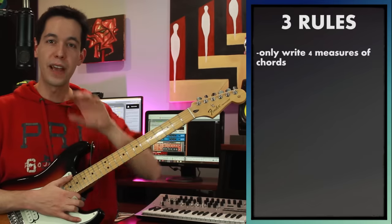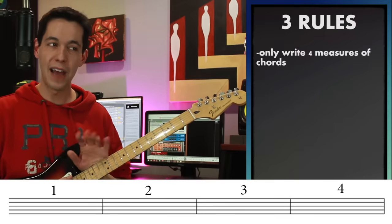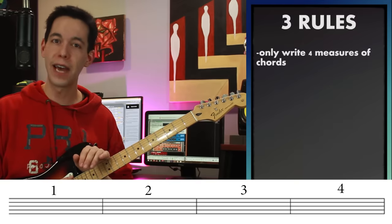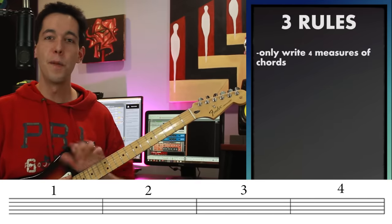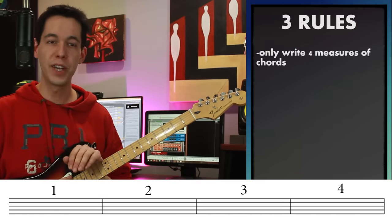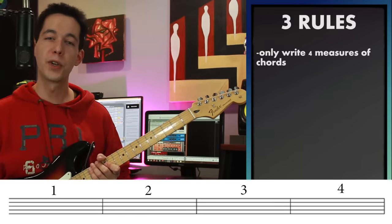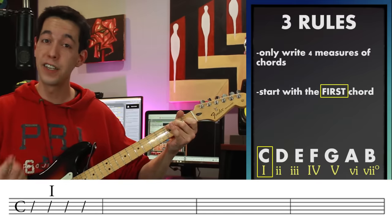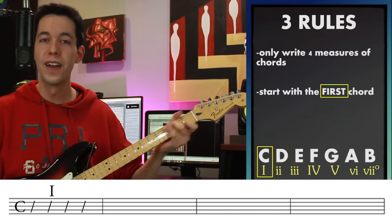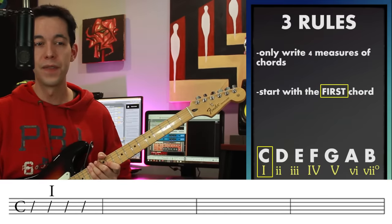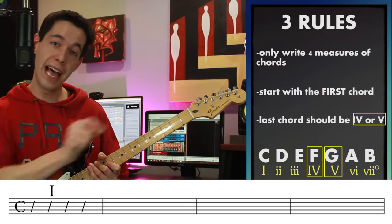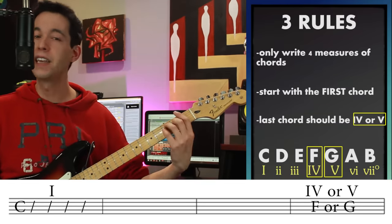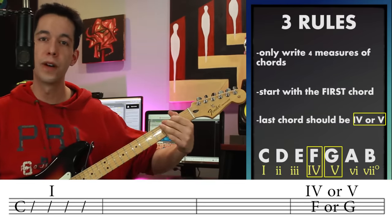Number one: make sure that we're writing four measures of music. I think four is a great place to start. Our next rule is to make sure that we're starting on the one chord — today that would be C major. So I have to start on my one chord. The last rule is that the very last measure needs to be either my four chord or my five chord — that would be either an F chord or a G chord.